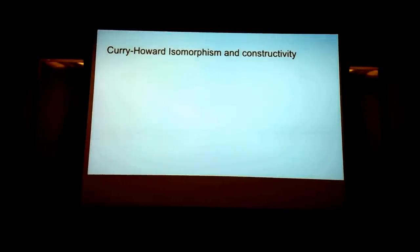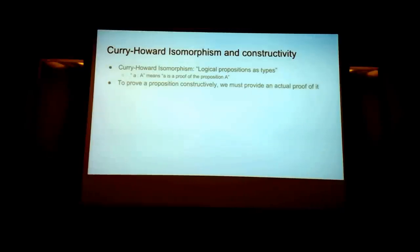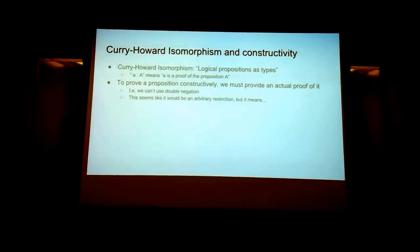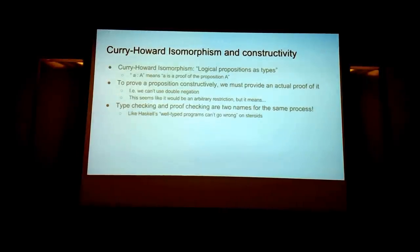The first thing we have to talk about is the Curry-Howard isomorphism and constructivity. The Curry-Howard isomorphism is basically: logical propositions are types. A term of type A can be interpreted as A is a proof of proposition A. To prove a proposition constructively, we must provide an actual proof of it — that means we can't use double negation.